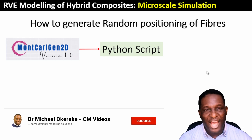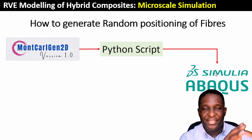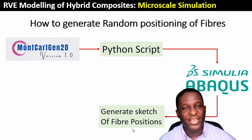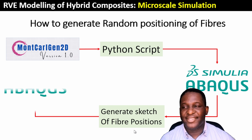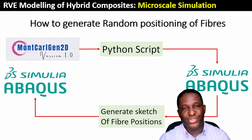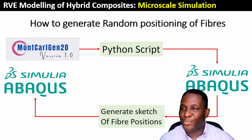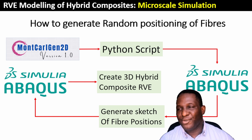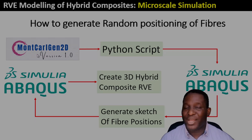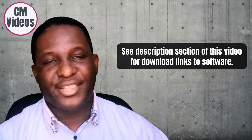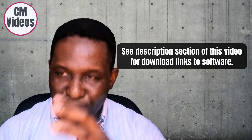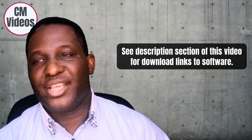Once Multi-CalGen 2D runs, it outputs a Python script. This Python script is then run directly inside Abaqus, which generates the sketch. We save that sketch and import it into a fresh new model to create the hybrid composite and ultimately generate the 3D hybrid composite RVE. If you need a copy of the Multi-CalGen software, please check the video description.